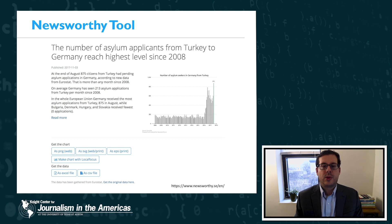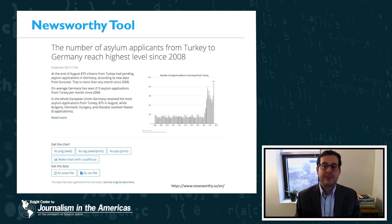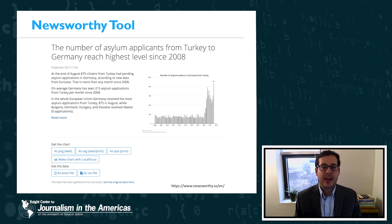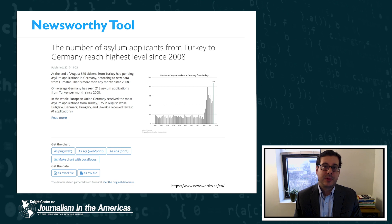Another example of computational story discovery is a tool called Newsworthy, which you can actually sign up for online at newsworthy.se. What Newsworthy does is it monitors open data sets — things like crime, unemployment, and real estate statistics — and it determines if there's some kind of anomaly, outlier, or trend in that data. If it finds something that might be interesting or newsworthy, it generates a lead like the one shown in this slide, with a headline, some text explaining what's going on in the data, a graph showing the trend, and links to download the chart or access the original data set. Journalists can subscribe to these alerts and receive them whenever something interesting pops up. Additional reporting work often still needs to be done before these leads are ready to publish.